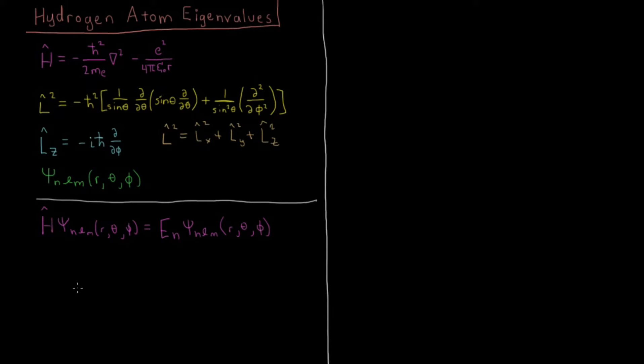And to remind ourselves, this En is going to be equal to minus Me E to the fourth, so mass times charge to the fourth, over eight epsilon naught squared, Planck's constant squared, times one over N squared. So it depends inverse quadratically on N.